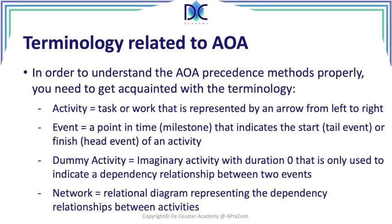An event is a point in time. We can also refer to it as a milestone, but here we have milestones related to activities. Typically we have milestones in a project which are more important events in the lifespan of the project. The event can indicate the start — then we call it a tail event — or the finish — then we call it a head event — of an activity. So we have an activity going from a tail event to a head event; it starts at the tail and finishes at the head.